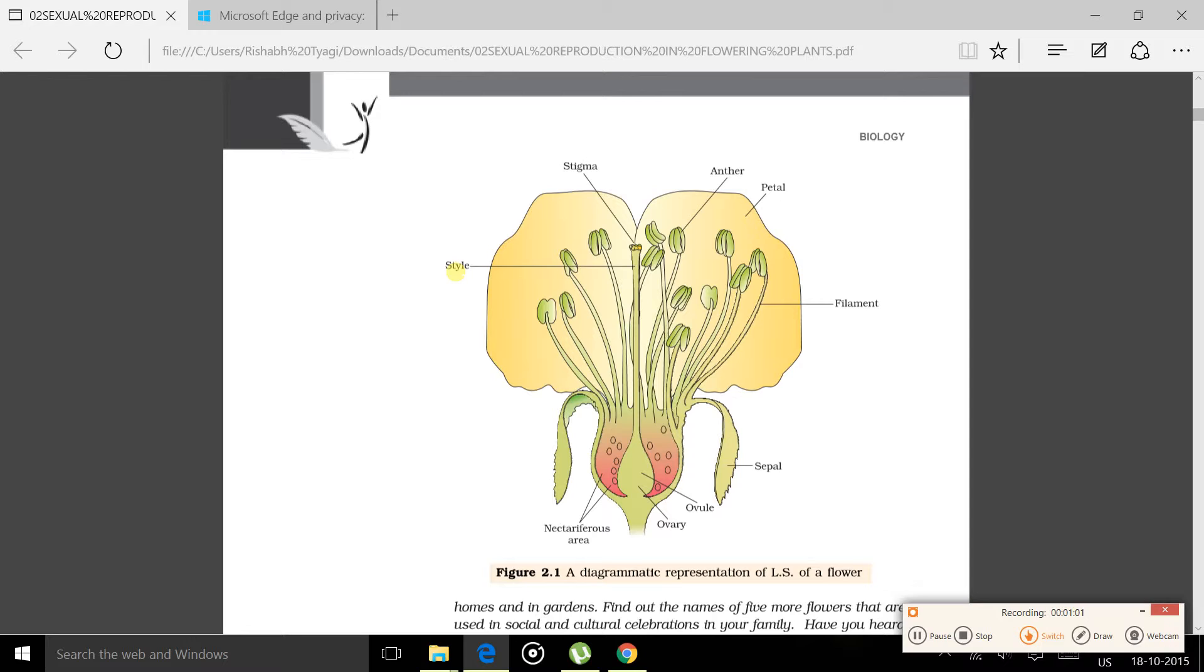Androecium consists of anther and filament. Anther stores pollen grains and filament connects to the anther.